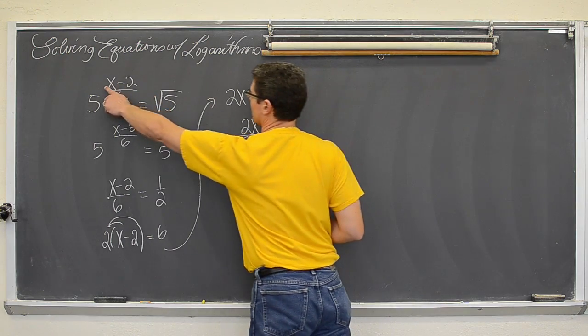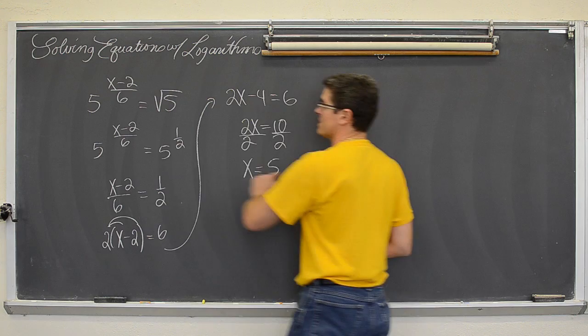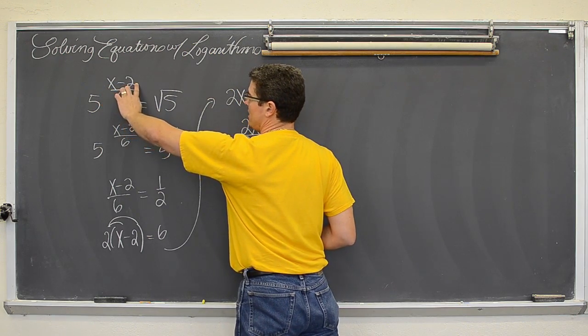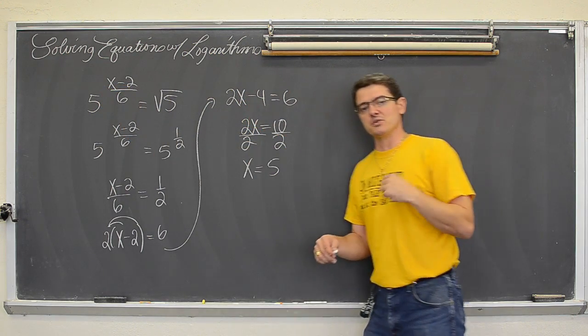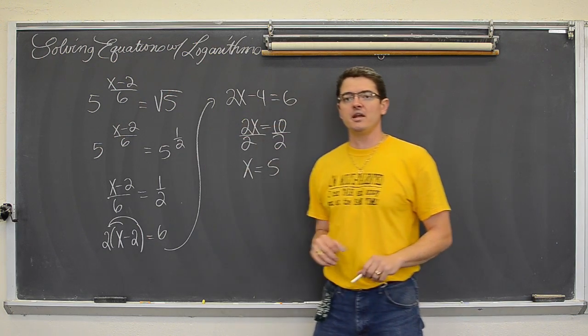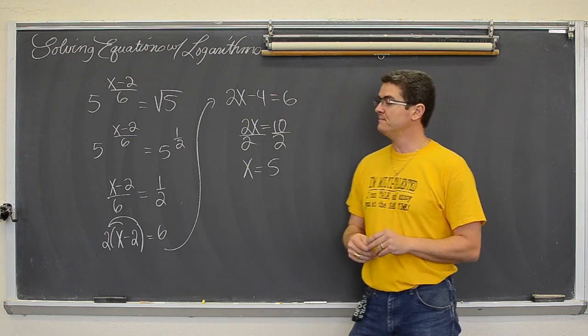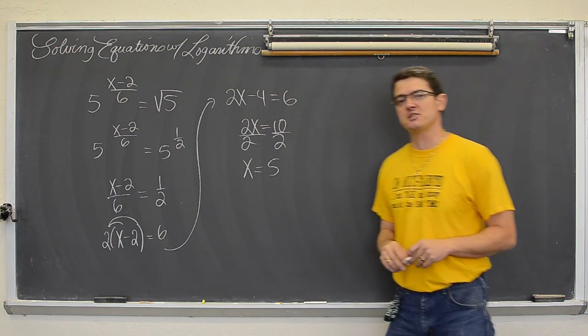So if I plug 5 into here, I should get the equivalent of the square root of 5. So let's see, 5-2 is 3, 3 divided by 6 reduces to one half, and yes, a power of one half is equivalent to the notation of the square root of 5. Good! So we have our solution, x equals 5.